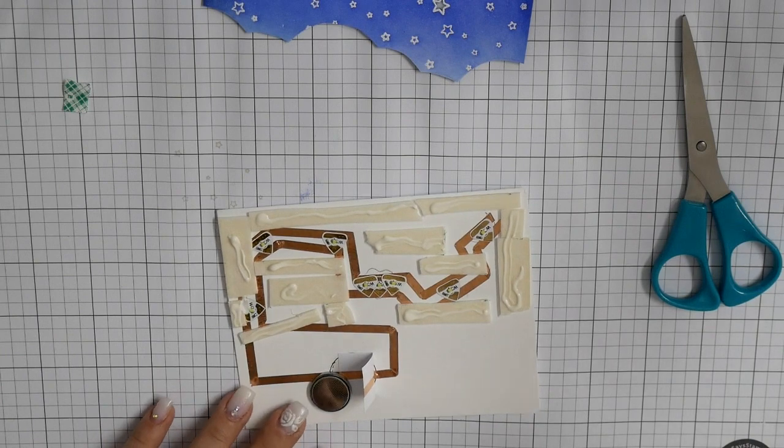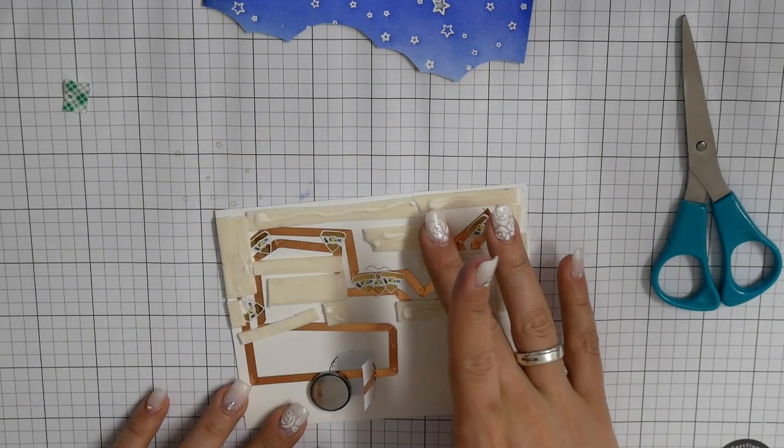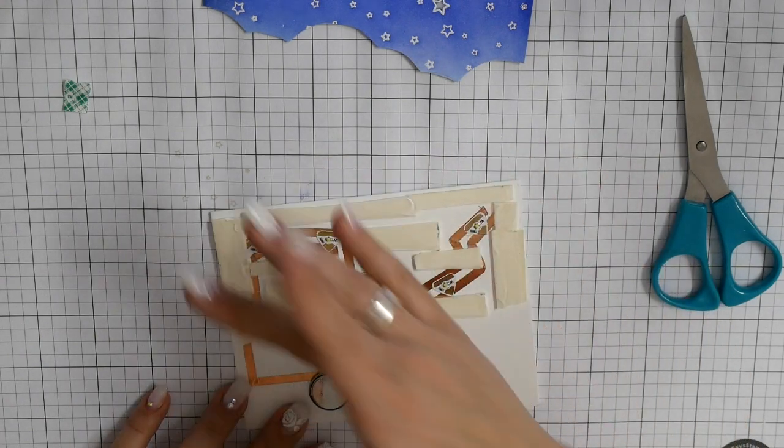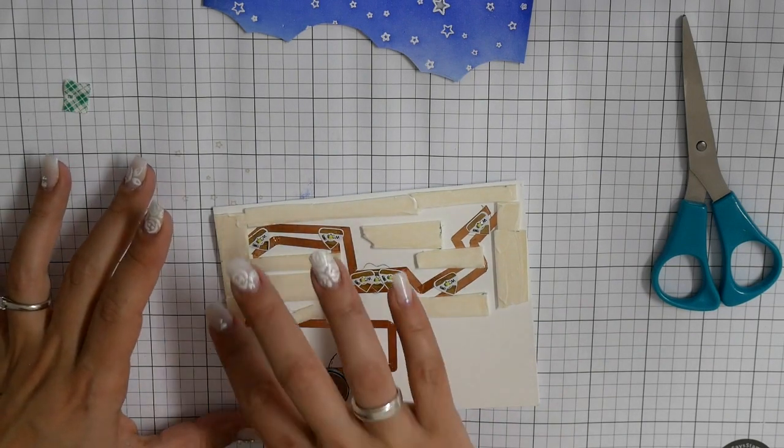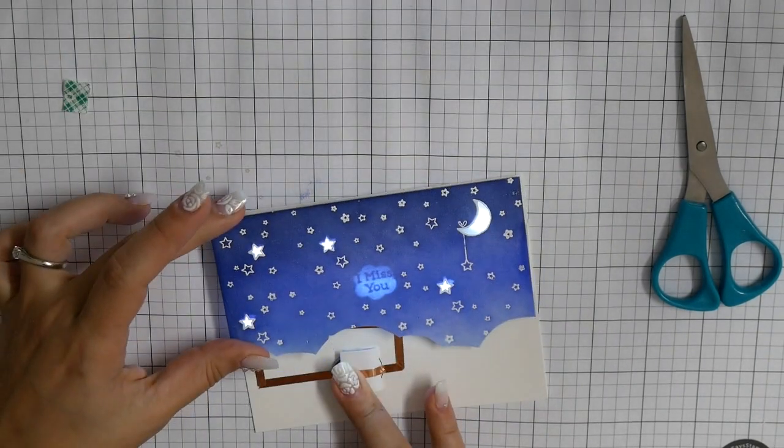And now I'm starting with gluing my card to put it together. I use here foam tape and also liquid glue. The liquid glue helps me to place my night sky background.